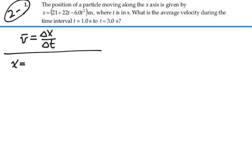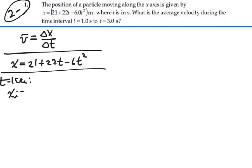Now our position for all time is equal to 21 plus 22t minus 6t squared. Hence, at t equal to 1 second, we'll have our initial position. That's equal to 21 plus 22 times 1 minus 6 times 1 squared, which would be 43 minus 6, or 37 meters.